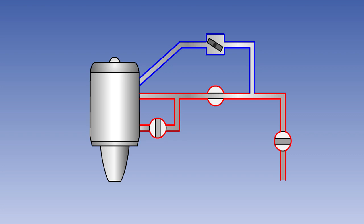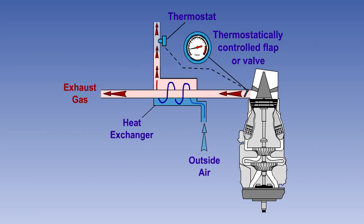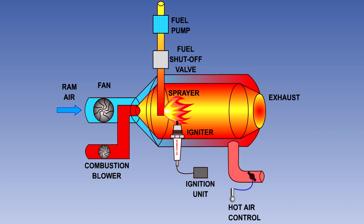The most common method of thermal ice protection is the hot air system. There are several methods by which the heated air can be supplied, and these include the bleeding of air from a turbine engine compressor, the heating of ram air by passing it through a heat exchanger located in an engine exhaust gas system, and the heating of ram air by a combustion heater.